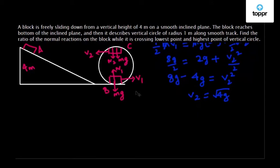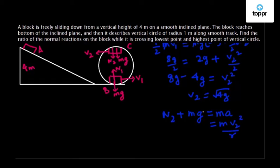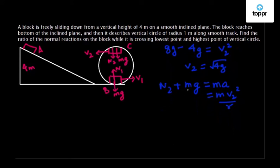Applying the force equation at point C: both N2 and weight Mg act downwards, so N2 + Mg = MV2²/R. Substituting V2² = 4g and R = 1 meter, N2 = M·4g/1 − Mg = 3Mg.